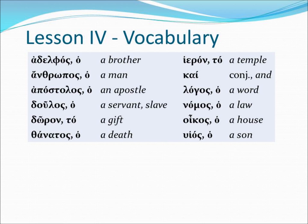Our vocabulary list will consist of the Greek word, its corresponding article, and the English translation. The article is provided in the list to give the elementary Greek student the ability to see the noun's gender. Now let's focus on each word.